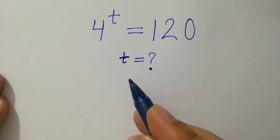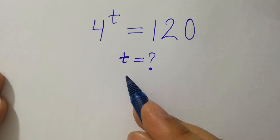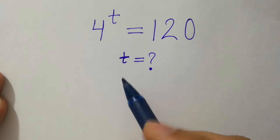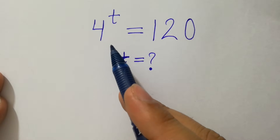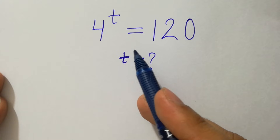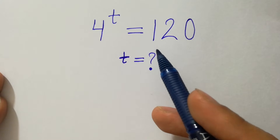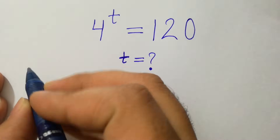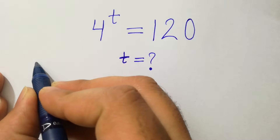Hello friends. Find the value of t if 4 to the power t equals 120. Let's have a solution.